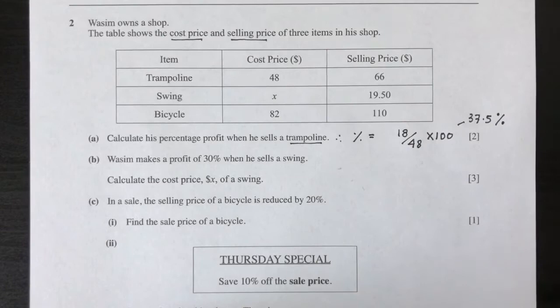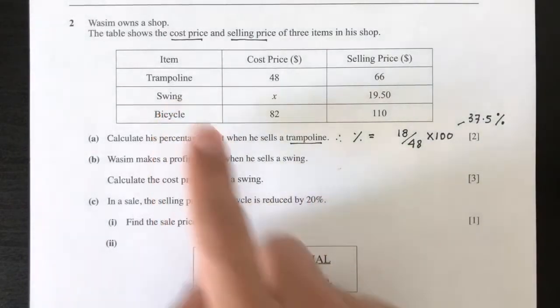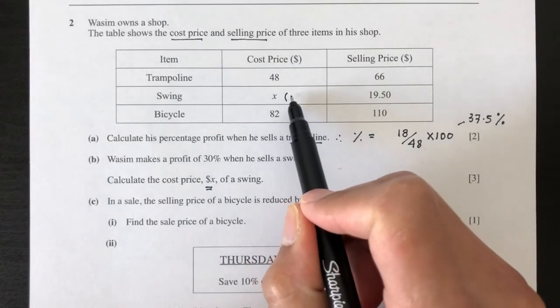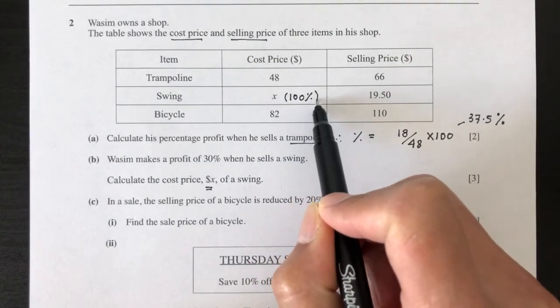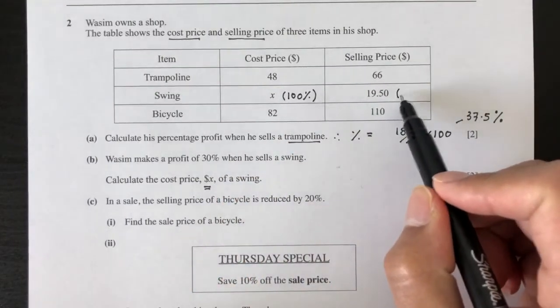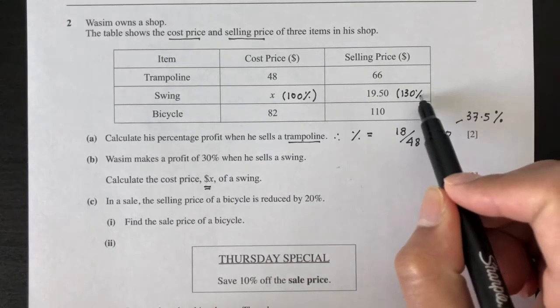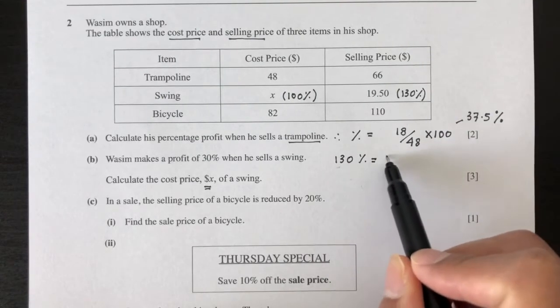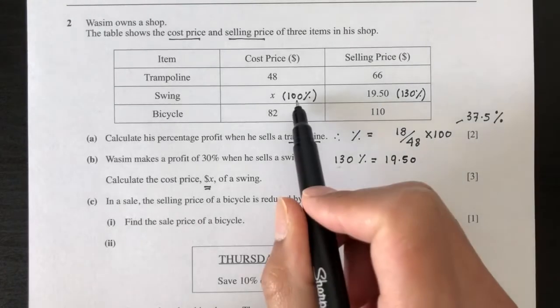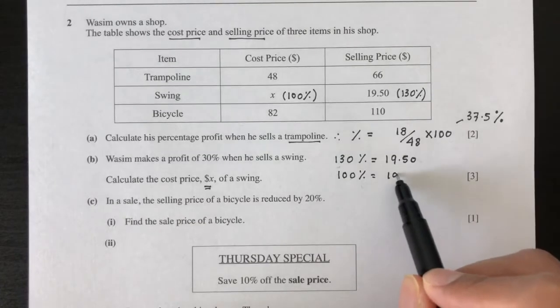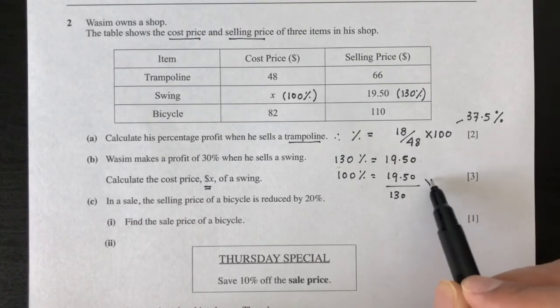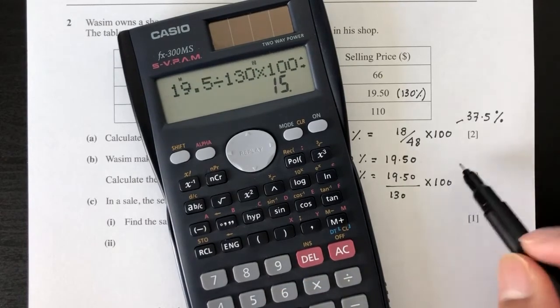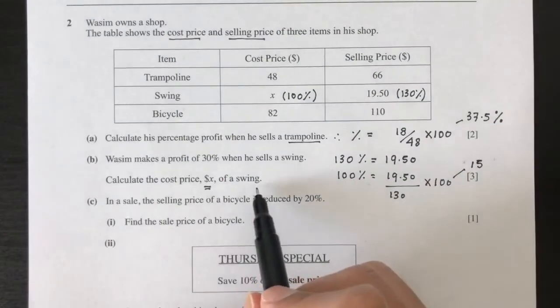Now for part B, Vasin makes a profit of 30% when he sells a swing. Calculate the cost X of the swing. You have to understand that the initial price is always 100%. Now if he makes a profit of 30%, it means that this price here is 130%. We'll do this by ratio. I know that 130% is equal to 19.5, but I want to find the value of 100%. That will be equal to 19.5 divided by 130 times 100. That should be 15. So your answer is X will be $15 for the swing.